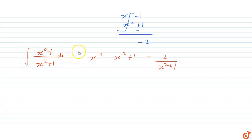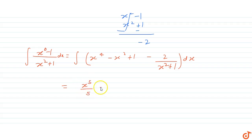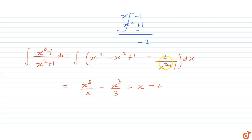Integrating with respect to x: the integration of x to the power 4 is x to the power 5 by 5, minus integration of x square gives x to the power 3 by 3, plus integration of 1 is x, minus 2 times the integration of 1 by x square plus 1 which is tan inverse x, plus integration constant c. So this is the answer.